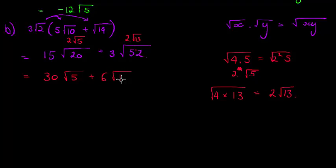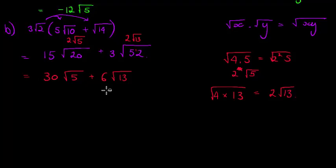I can see this is the most simplified I can write the expression. Once you have a prime number under your square root you have the simplest form of that surd. There is no way to write this expression so that both terms share the same root — it would be like having 30x plus 6y, which cannot be simplified further.